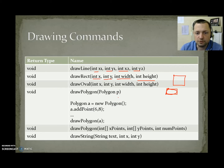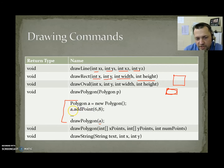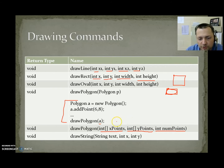drawPolygon is used to draw a shape with many edges. You can create a Polygon object and use polygon.addPoint() multiple times, then call drawPolygon(polygon). Alternatively, drawPolygon(int[] xPoints, int[] yPoints, int nPoints) takes an array of x points, an array of y points (both the same length), and the number of points. drawString(text, x, y) places the given text string on screen at the specified x and y position.